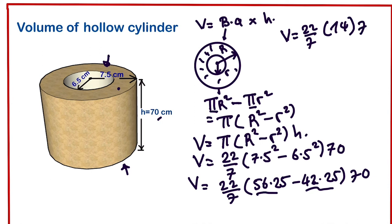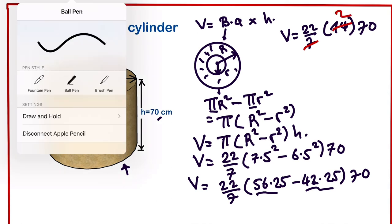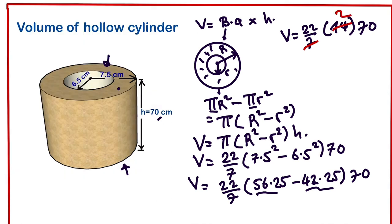Times 70. We simplify this further, 7 here and 7 here. If we multiply all of these, V will be equals to 22 times 140, which will give us 3080. The unit is centimeters cubed.